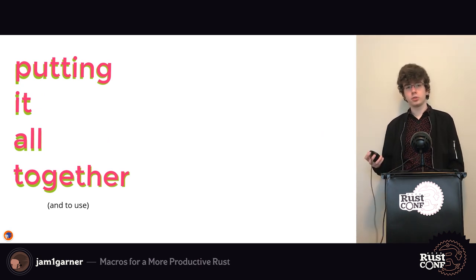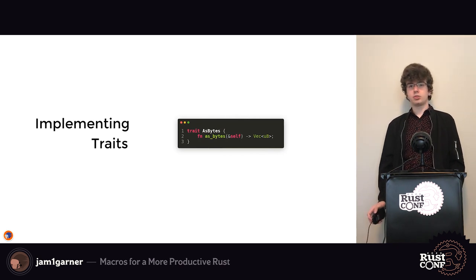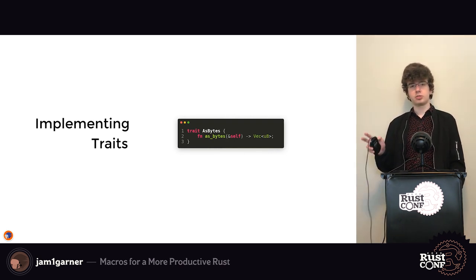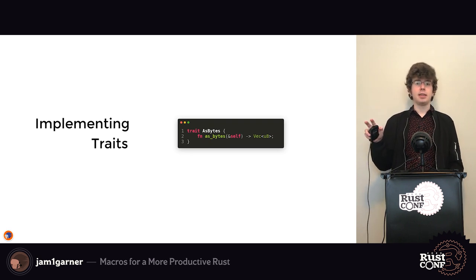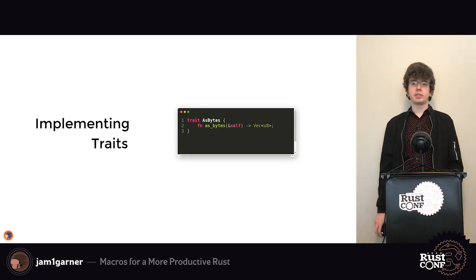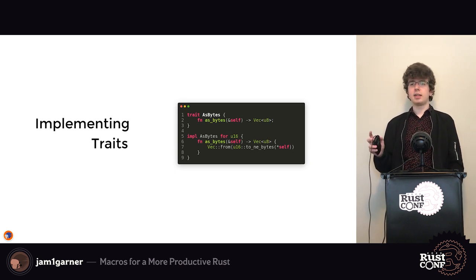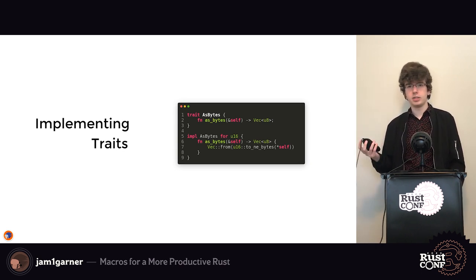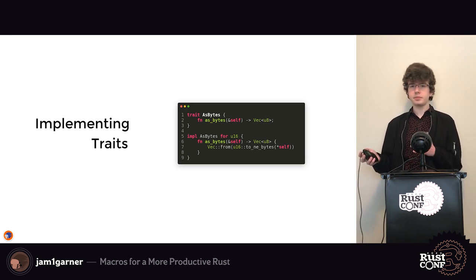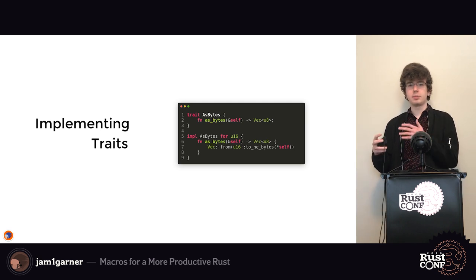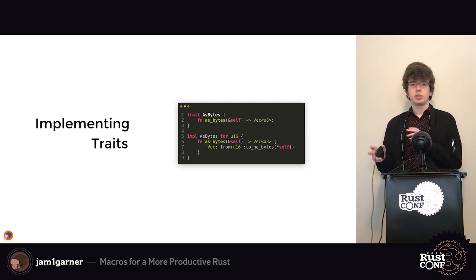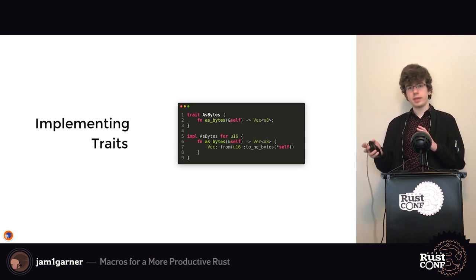When we put those together we can do cooler things. For example, there's a trait called AsBytes — all it does is take whatever struct implements it and convert it into a vector of bytes. If you want to implement it for u16, you use the associated functions for converting u16s into bytes. But if you have to write this for every integer type, it's a lot of repetitive code that's hard to manage.